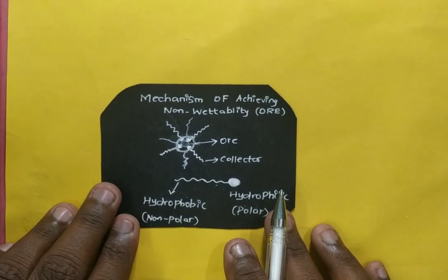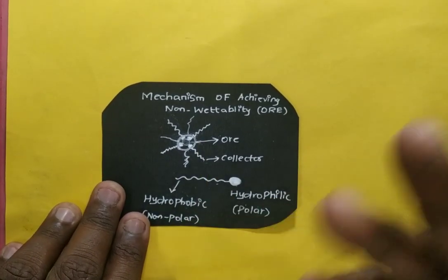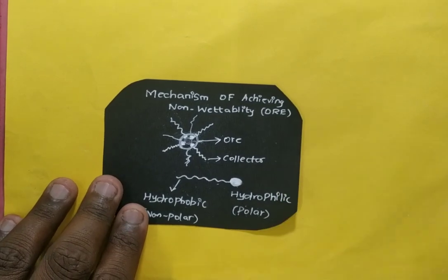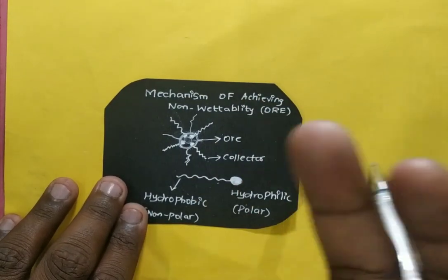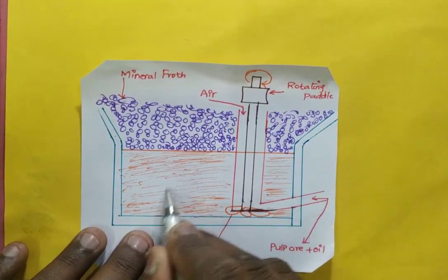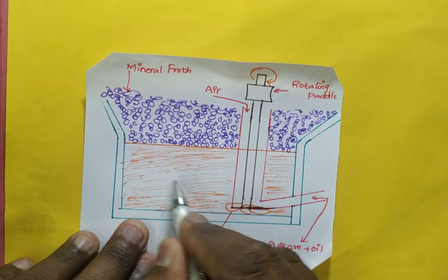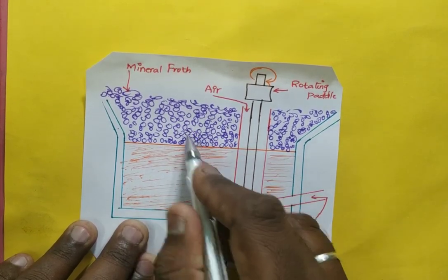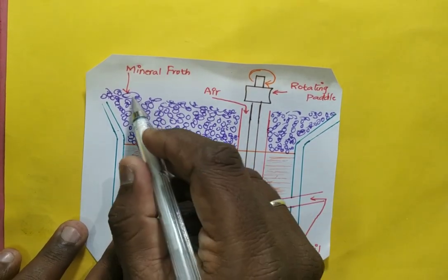Once the ore becomes non-wettable by water, oil comes and forms a layer around it, wetting the ore. Since oil is less dense, the ore particles rise up into the froth. Due to rotation, the oil separates as bubbles or froth, and the ore particles are carried within that froth. The sulfide ores are then skimmed off and collected.